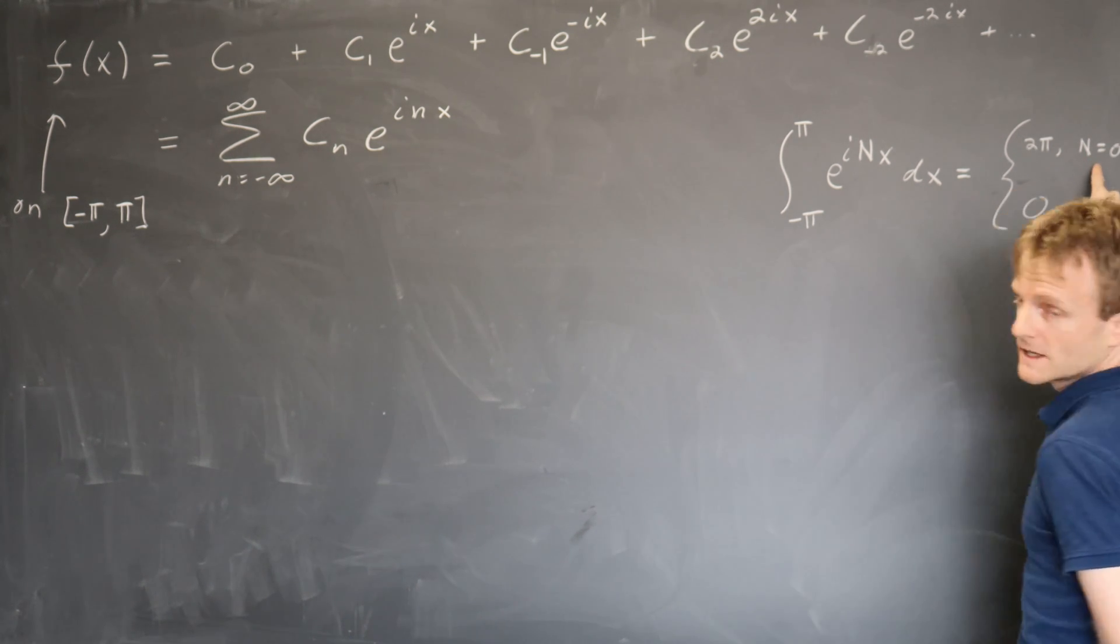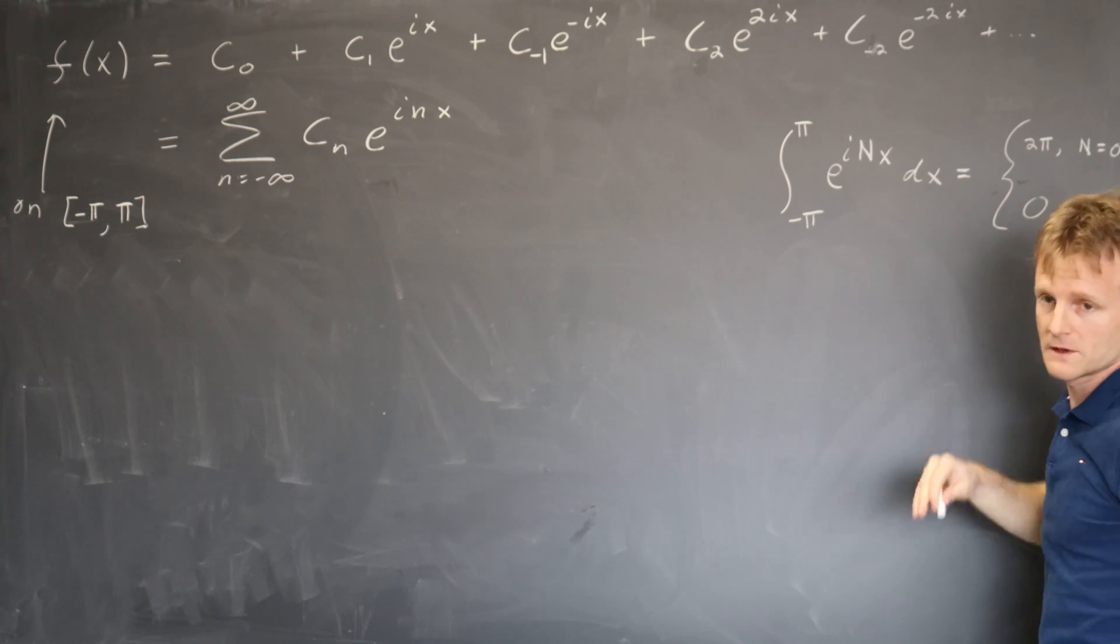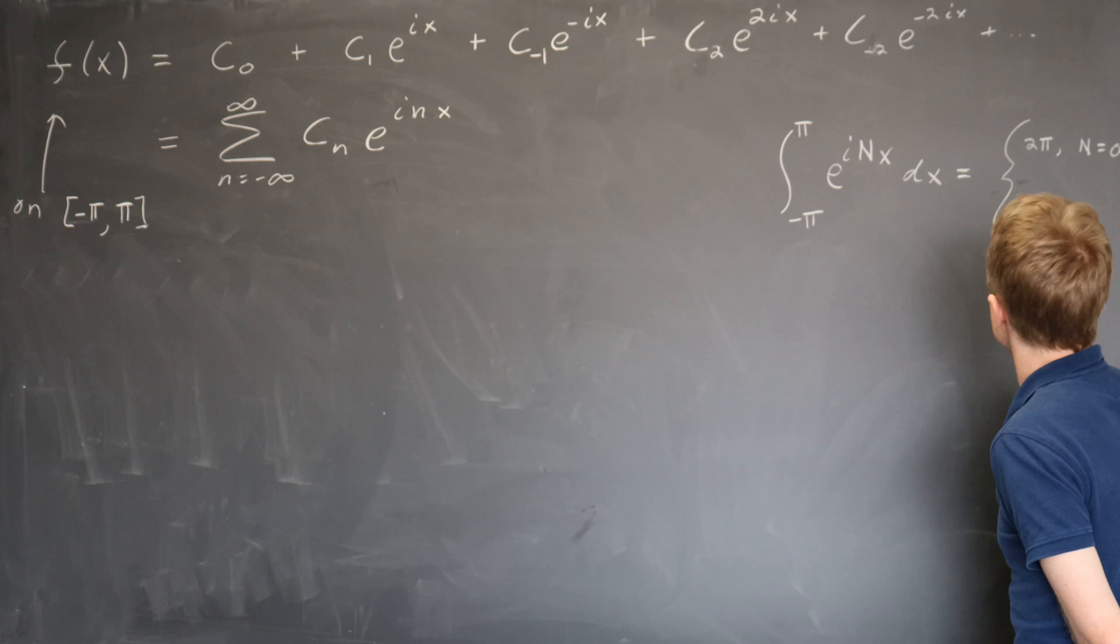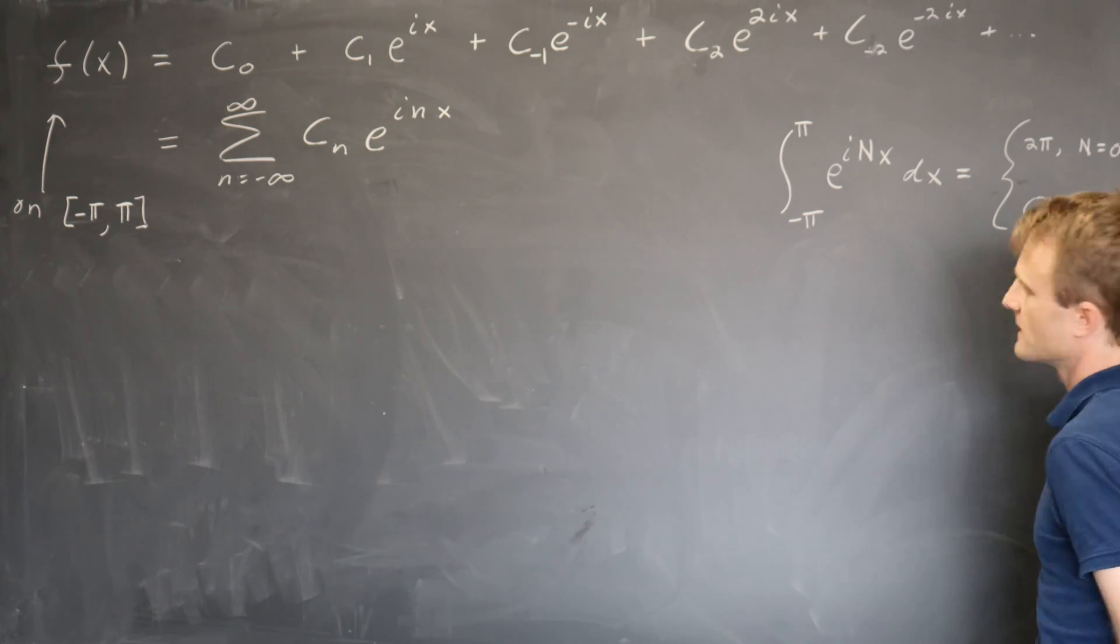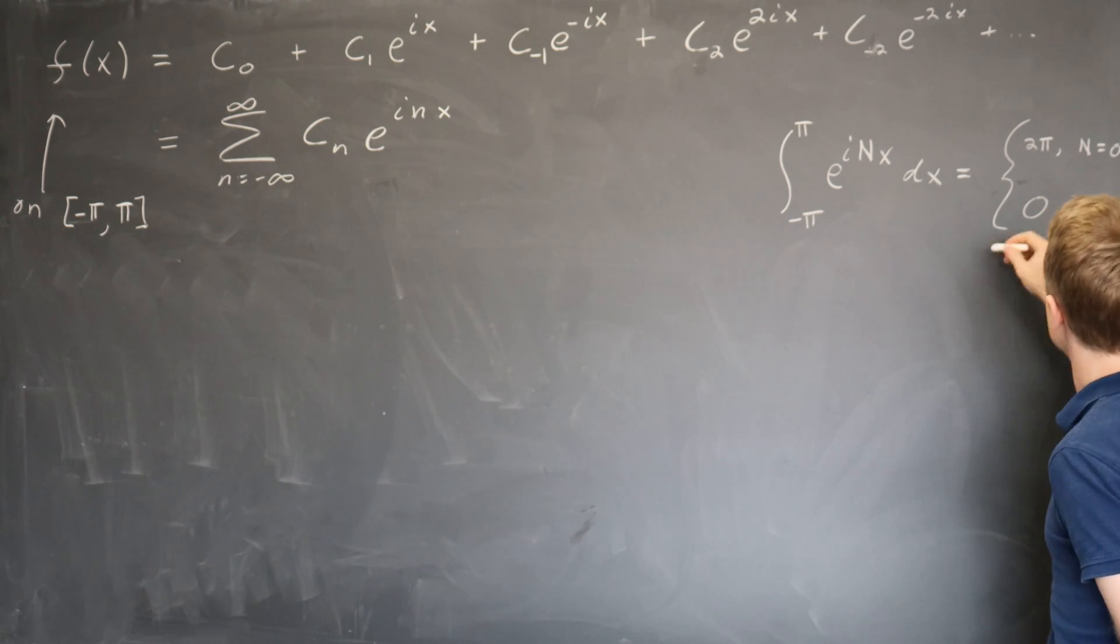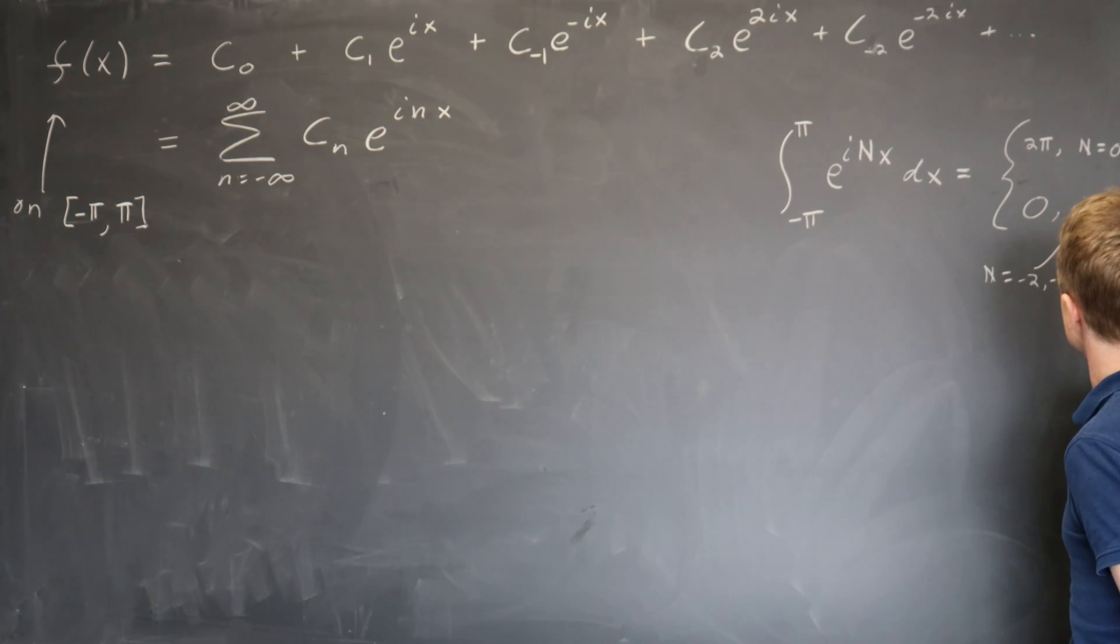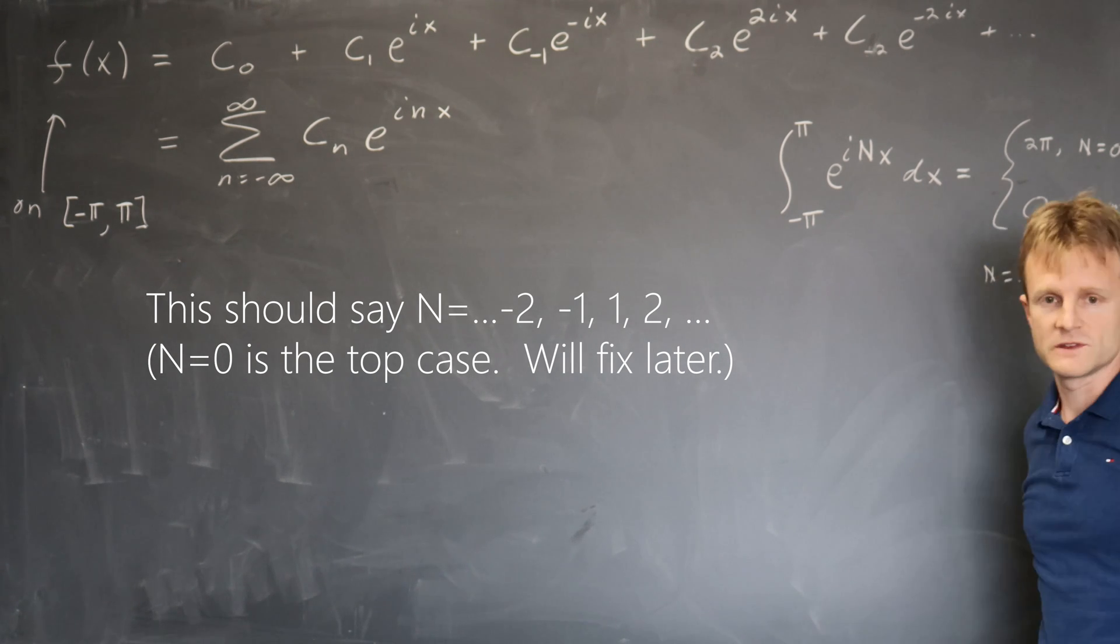So if n equals 0, this is just the integral of 1 from minus pi to pi. So it's just the length of the region we're integrating over 2 pi. And if n is not 0, otherwise, if n is just some other integer, minus 2, minus 1, 0, 1, 2, et cetera, then this thing is going to be 0.